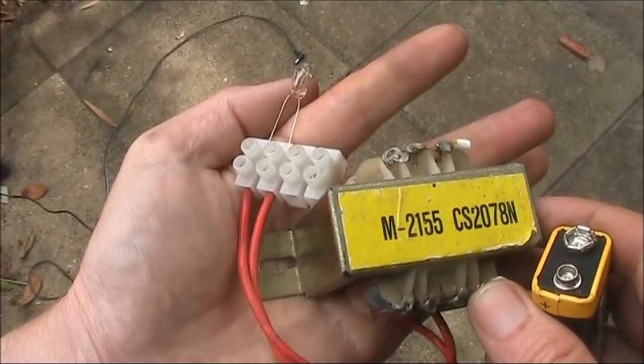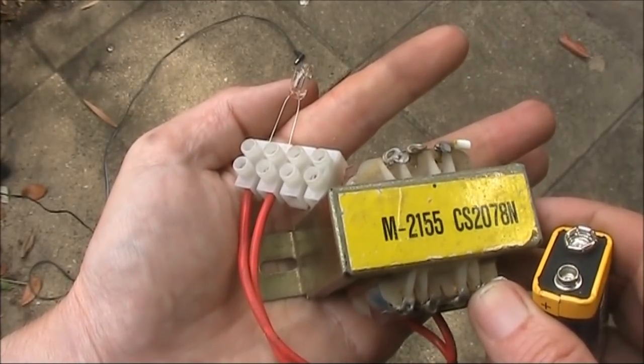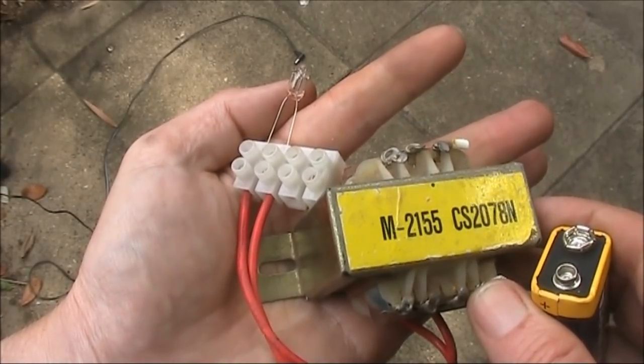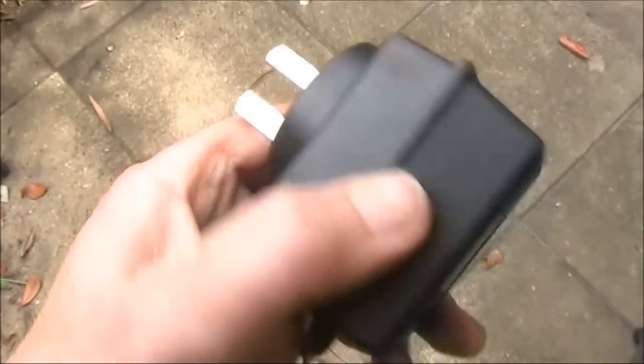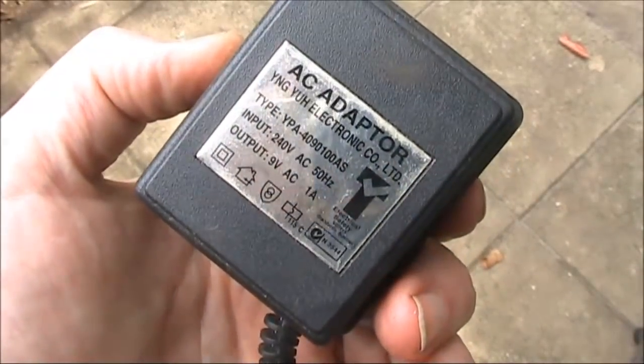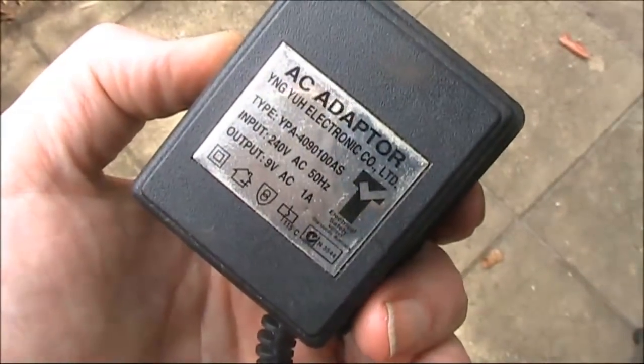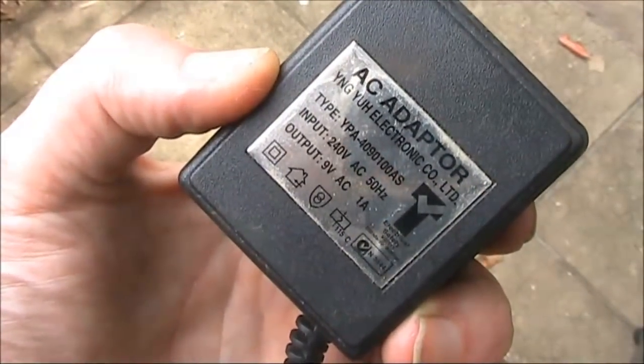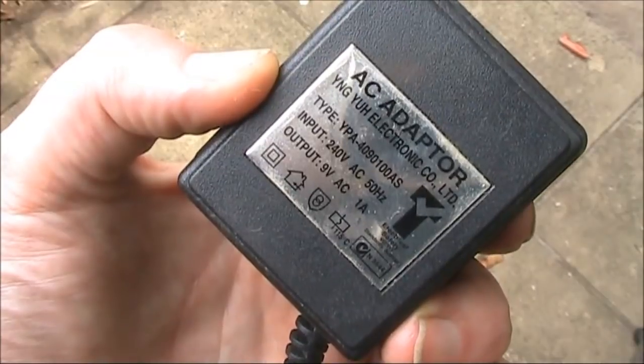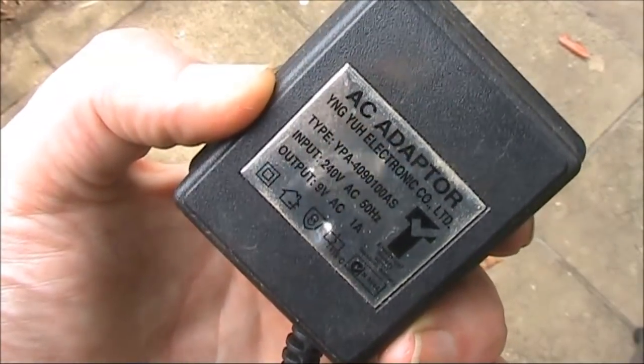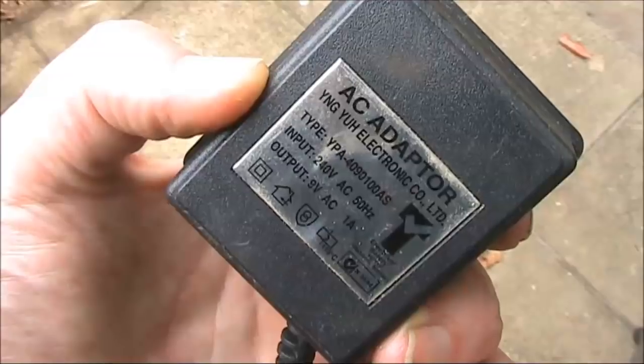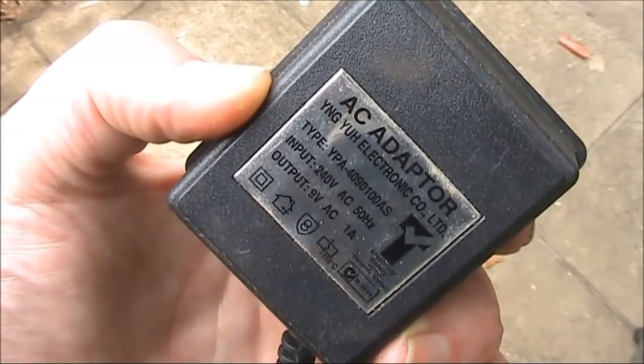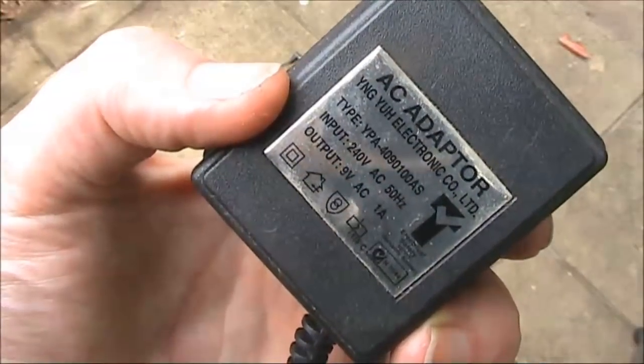If you want the neon to be on continuously, rather than when I apply and remove DC power, then you need a low voltage AC source. Such a suitable low voltage AC source is this power adapter. Notice on the back, it says 9 volt AC, 1 amp. That's somewhat unusual. Around 90% of power adapters give you DC rather than AC. They are unsuitable for this experiment. But if you can find an AC one, doesn't matter if it's 9 volts, it could be 6 volts, it could be 12 volts,